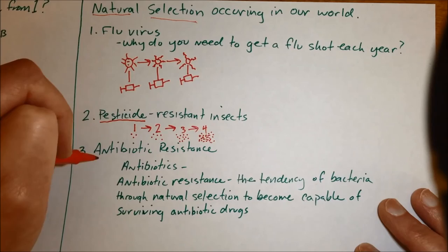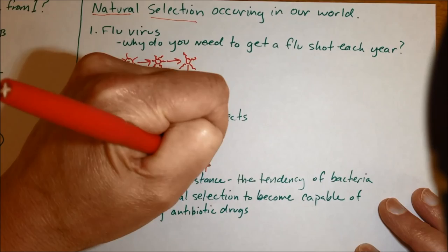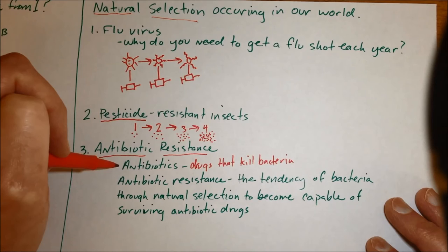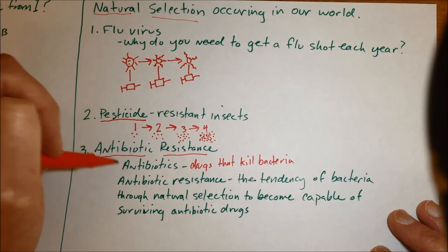The last example of natural selection that was discussed in class is antibiotic resistance. Antibiotics are drugs that kill bacteria and antibiotics have been really kind of a miracle drug since they were discovered in the early 1900s.